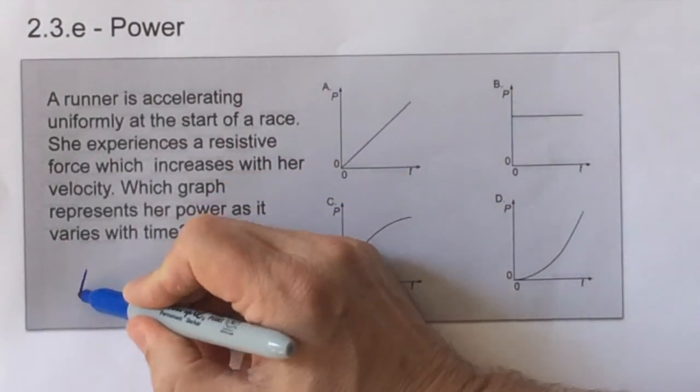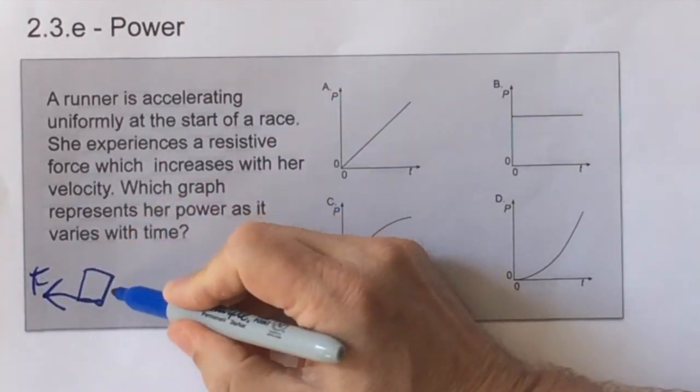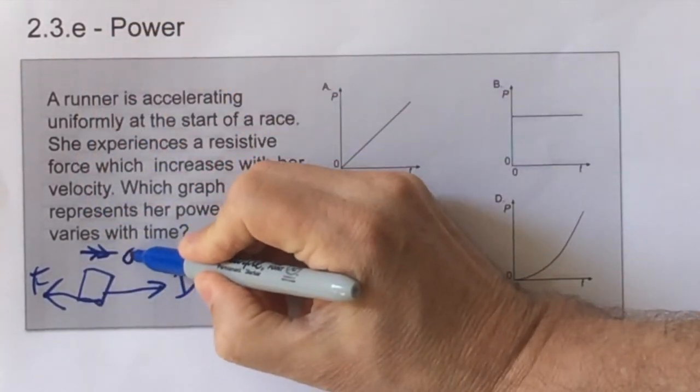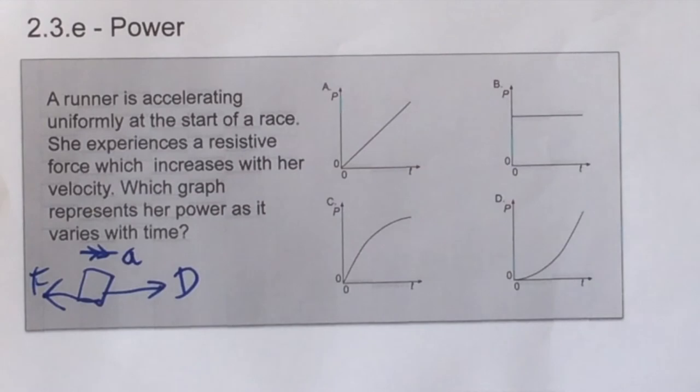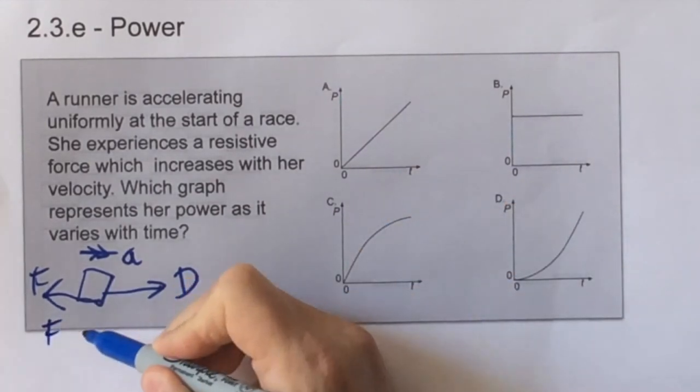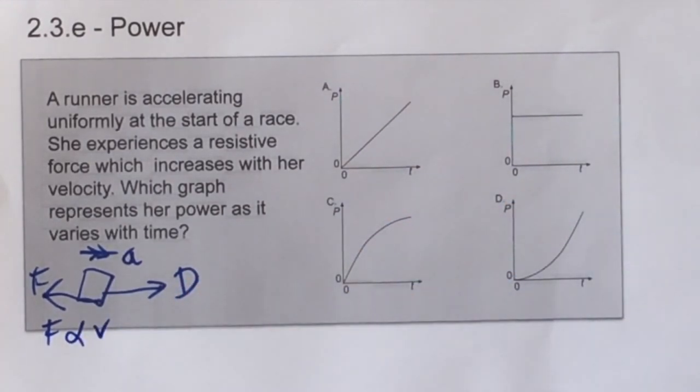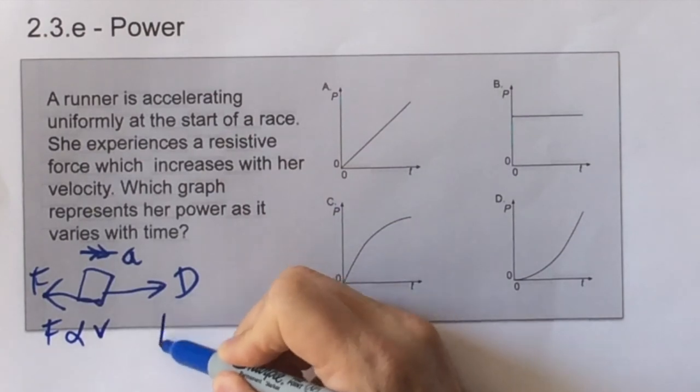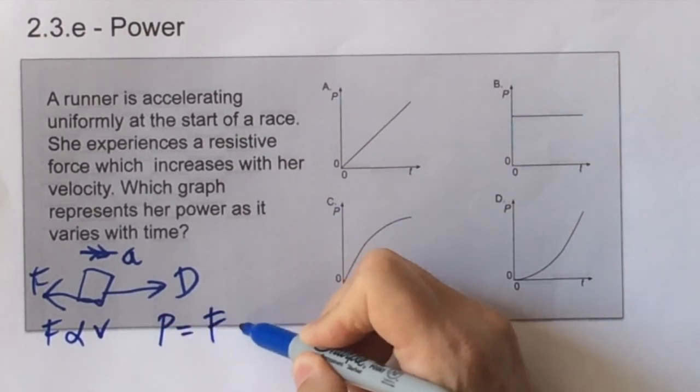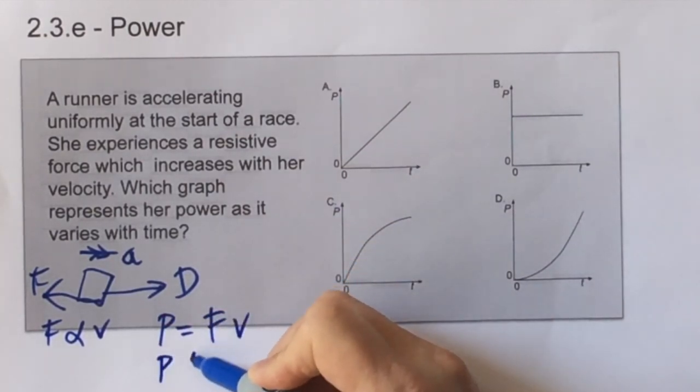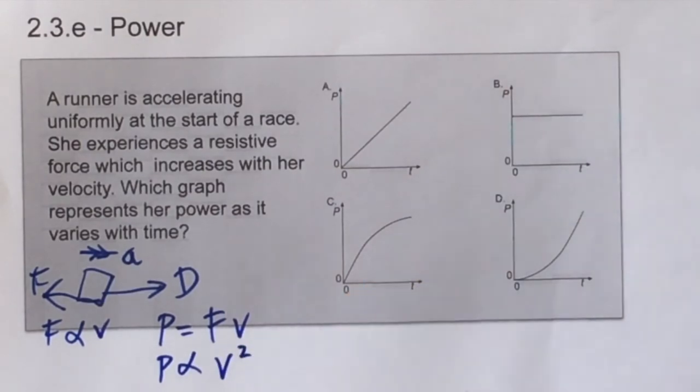The runner is experiencing a resisting force, but she is accelerating and so the driving force is larger. The resisting force is proportional to V. But the whole power, which is what we need to find, is the force times the velocity. And since the force is also proportional to velocity, then the power is proportional to velocity squared. And therefore the graph is D, the squared curve.